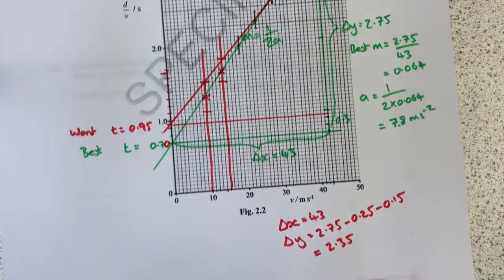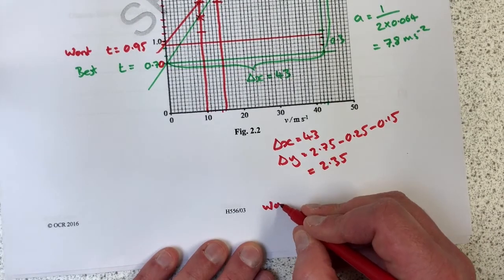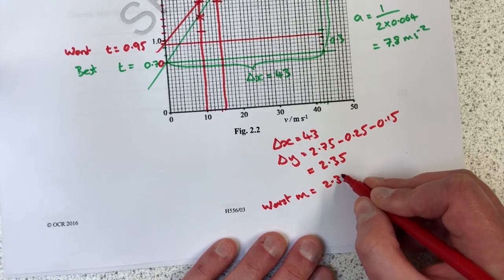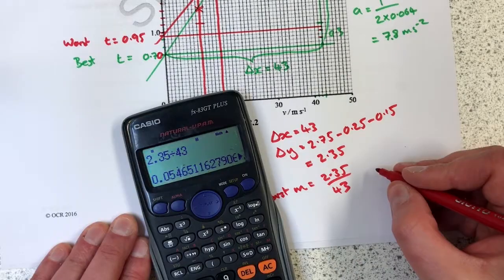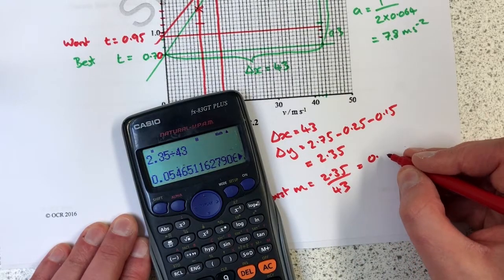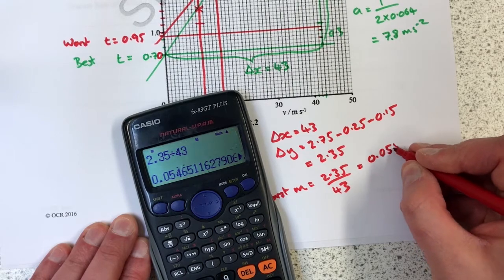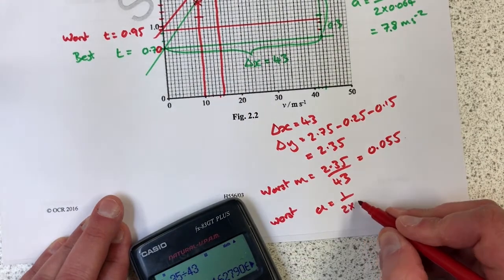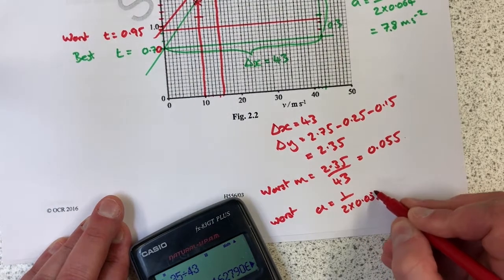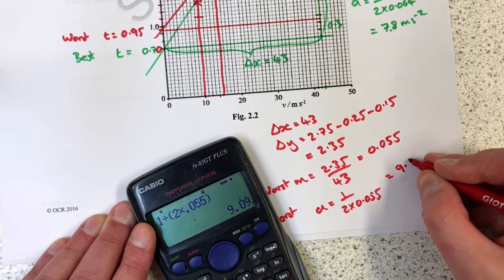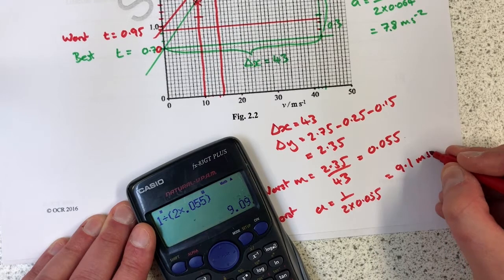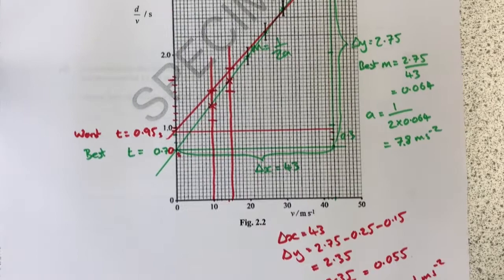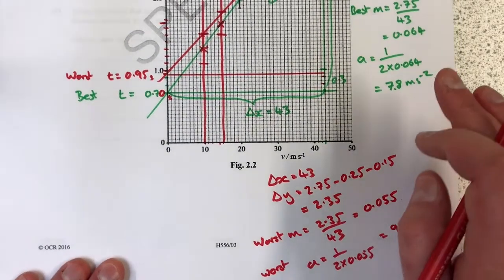And my dy the worst 2.35, and then I can do the same calculations I've done up here but for my worst line. Worst gradient dy by dx, 2.35 divided by 43, to 2 sig figs that's going to be 0.055. Worst a, 1 over 2 times 0.055, to 2 sig figs, 9.1 meters seconds to the minus 2.